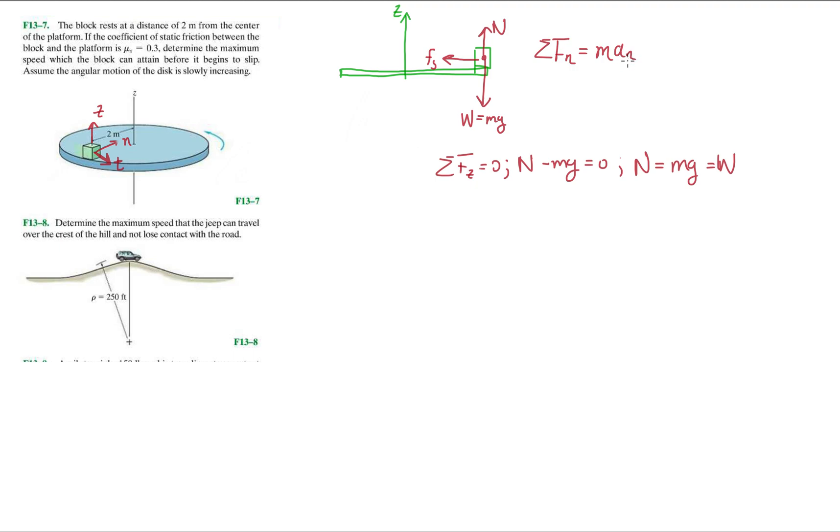Now we have to figure out what this equation is. The normal acceleration we can write as V squared over rho. The rho is the radius of curvature, which in this case is going to be 2 meters. So we're going to have mass times V squared over 2. We're trying to figure out what this V is.